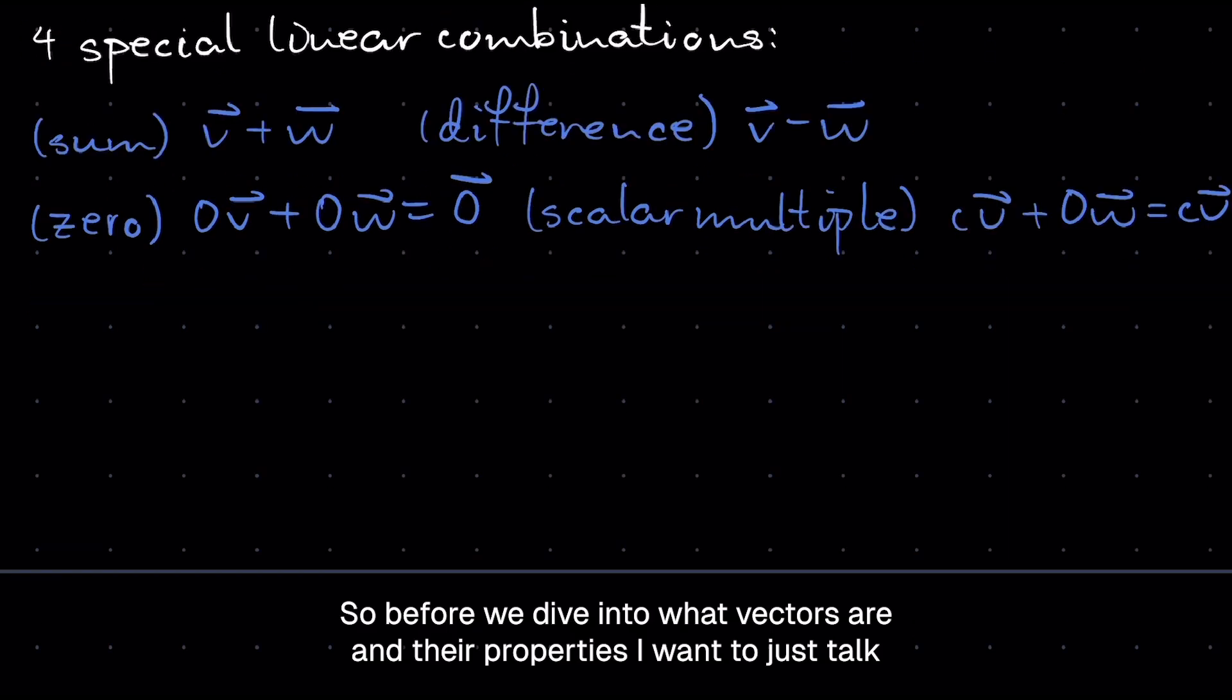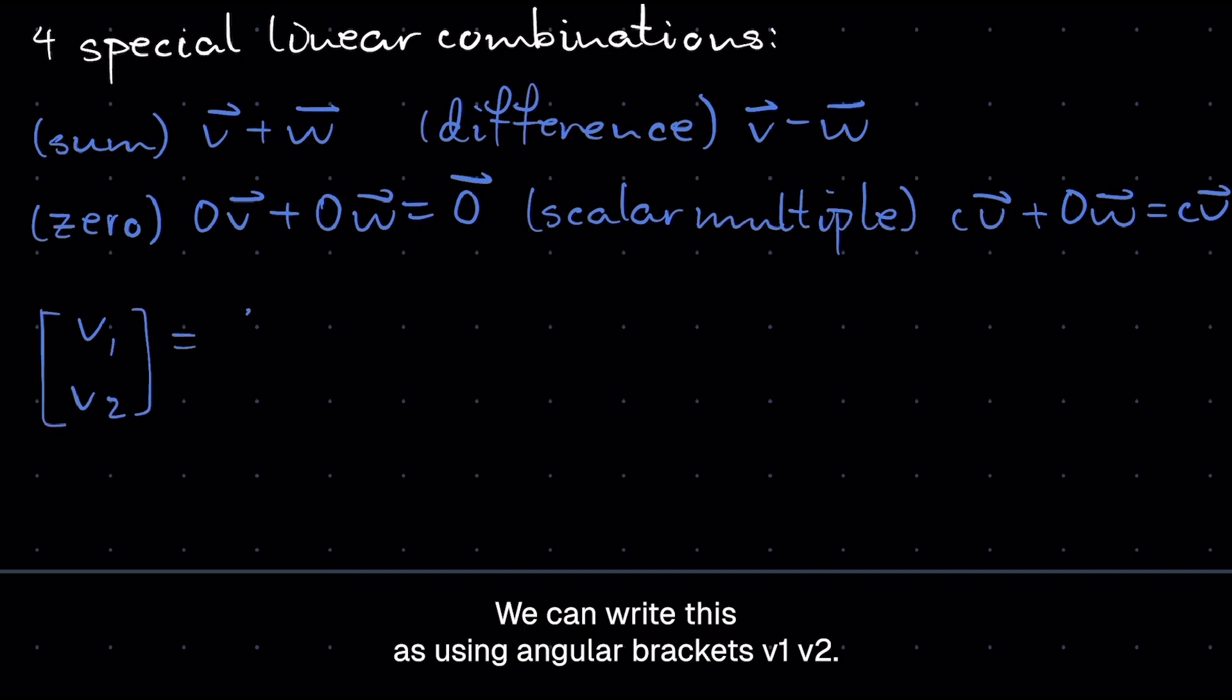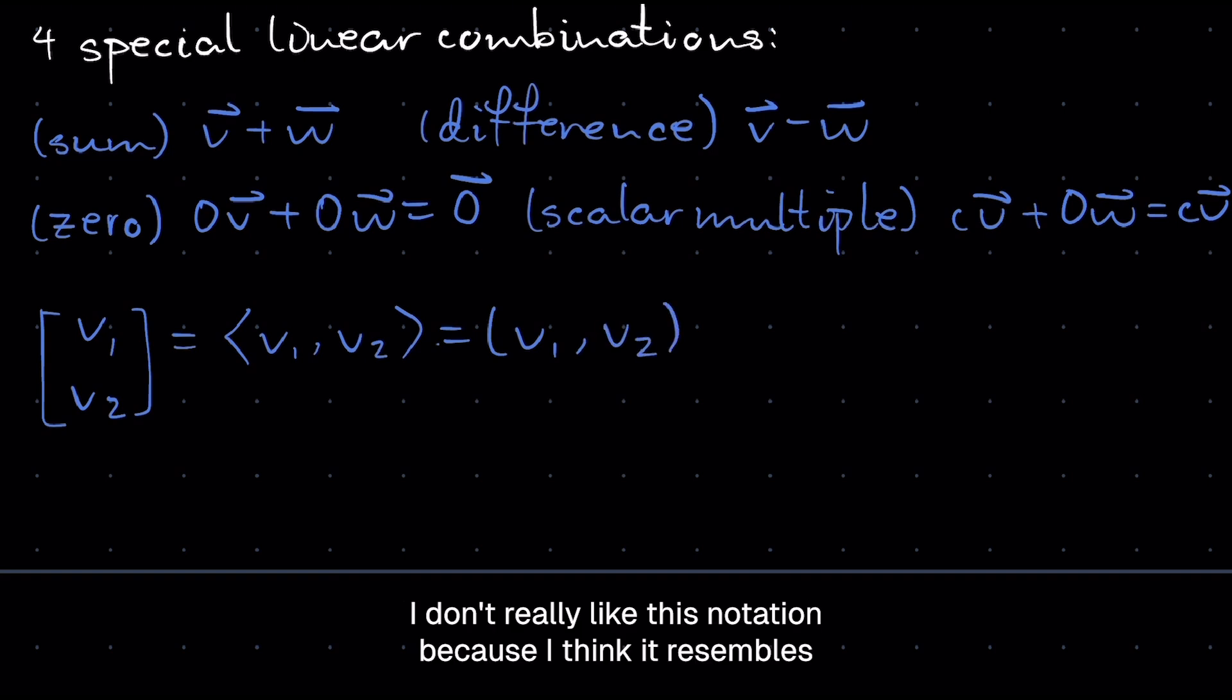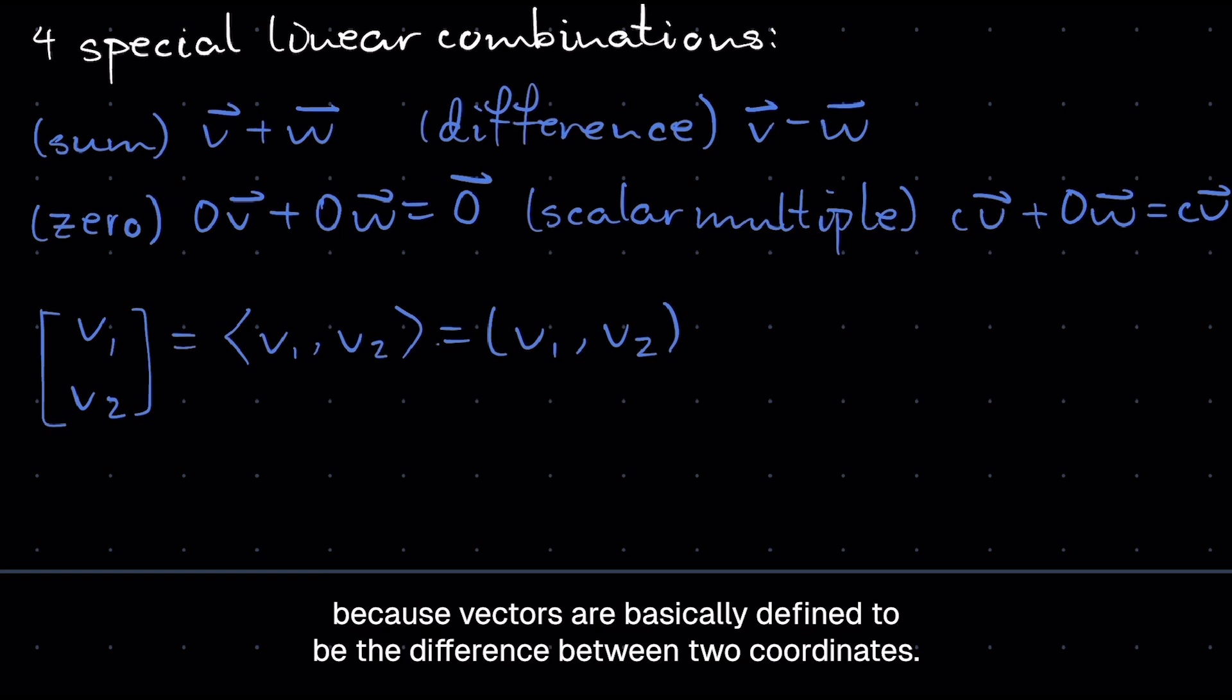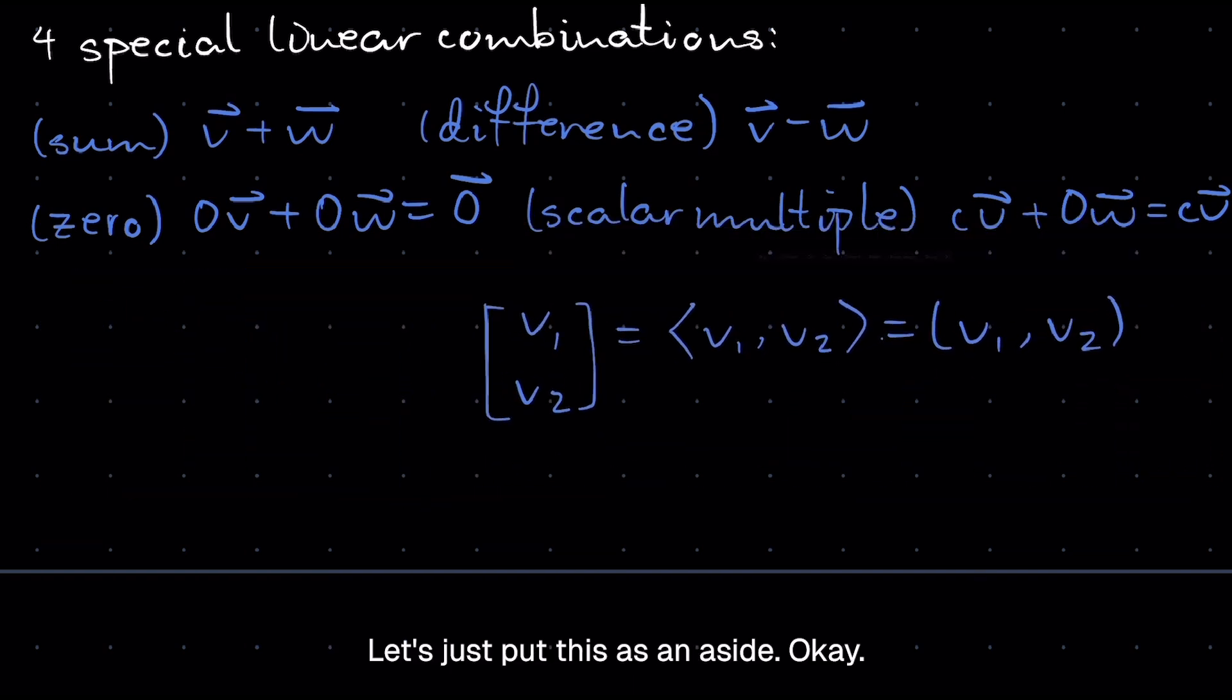So before we dive into what vectors are and their properties, I want to just talk about how we can use a shorthand to denote vectors. So V1, V2, we can write this using angular brackets, V1, V2. That's basically how I got taught. You might look at some people and they might write V1, V2. I don't really like this notation because I think it resembles a coordinate too much. And vectors, as I said before, are not similar to coordinates. They're completely different, although they do have some similar points because vectors are basically defined to be the difference between two coordinates. All right, enough of that. Let's just put this as an aside.